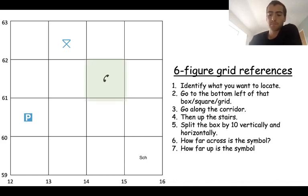So we'll use the telephone again and we will just start off by figuring out the four figure grid reference. From the bottom left corner, step two, step three, we go along the corridor, we get 14, we go up the stairs, we get 61.